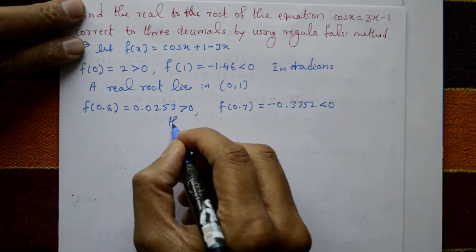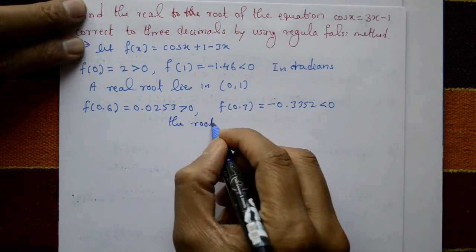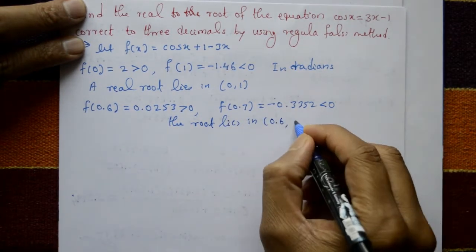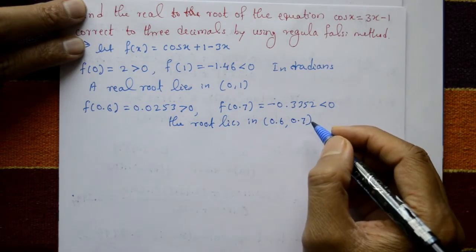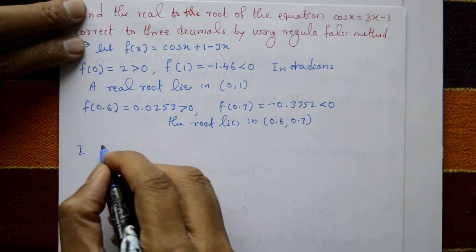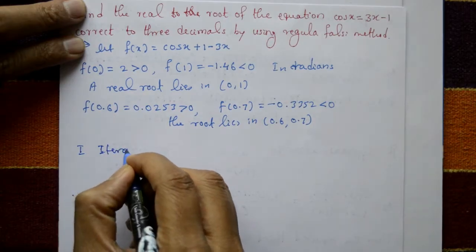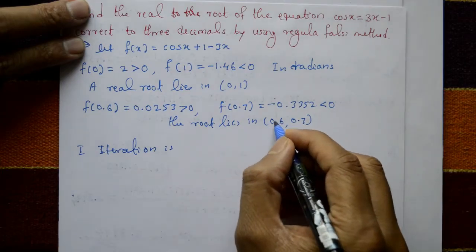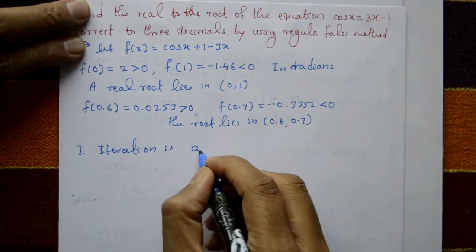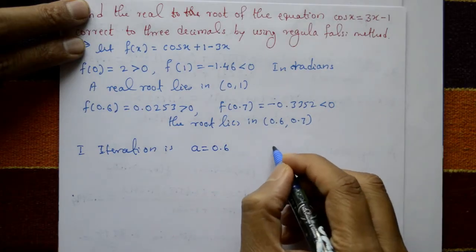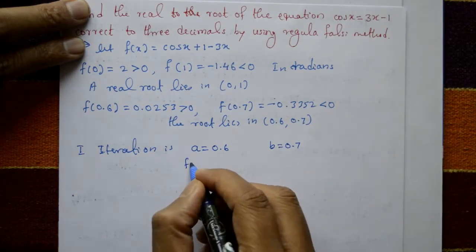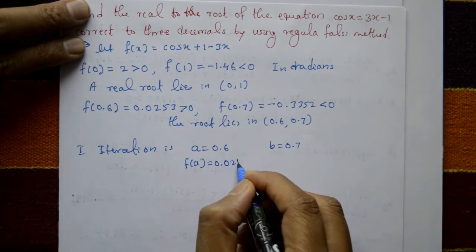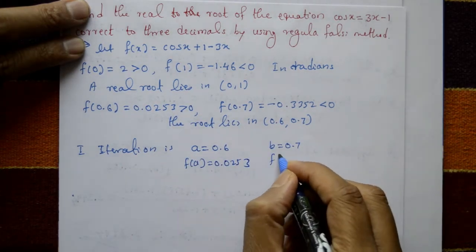The root lies between 0.6 and 0.7. For the first iteration, take a = 0.6 and b = 0.7. Then f(a) = 0.0253 and f(b) = -0.3352.